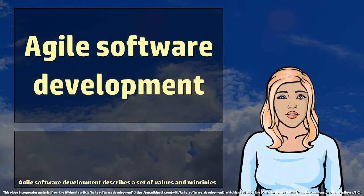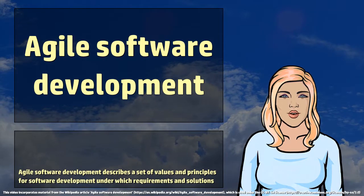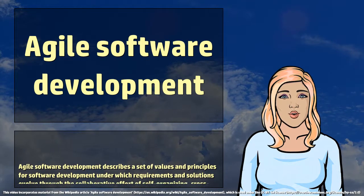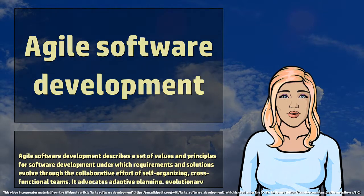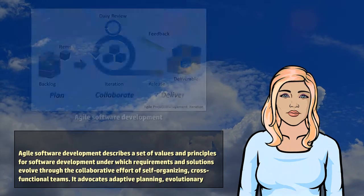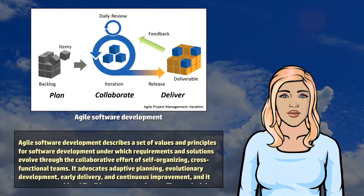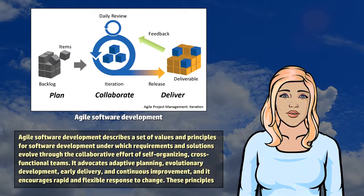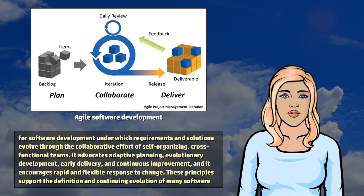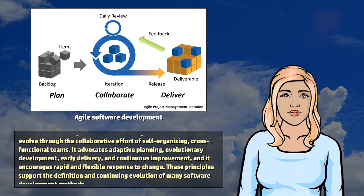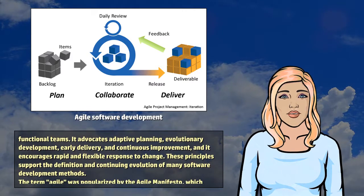Agile Software Development describes a set of values and principles for software development under which requirements and solutions evolve through the collaborative effort of self-organizing, cross-functional teams. It advocates adaptive planning, evolutionary development, early delivery, and continuous improvement, and it encourages rapid and flexible response to change. These principles support the definition and continuing evolution of many software development methods.